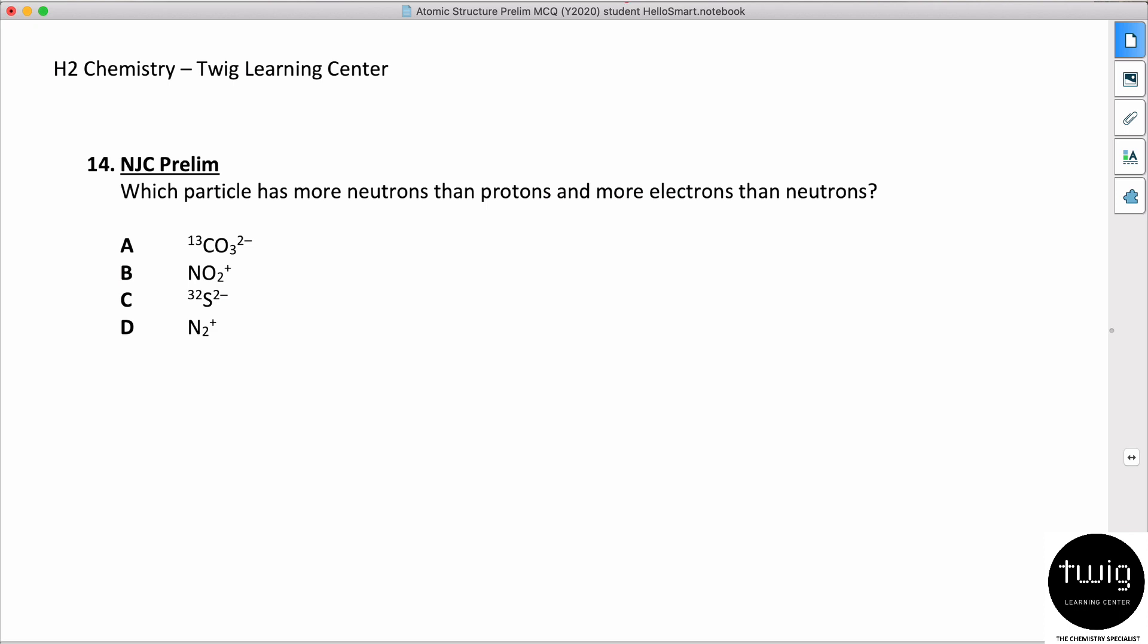Which particle has more neutrons than protons and more electrons than neutrons? Okay, so they say more neutrons than protons, more electrons than neutrons. Maybe we have to probably do it this way - I think I have to try to calculate for all of them.